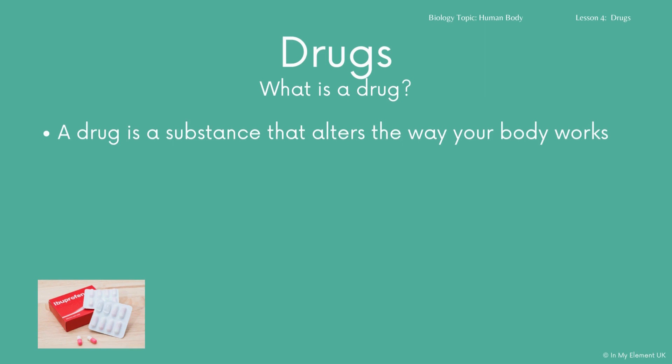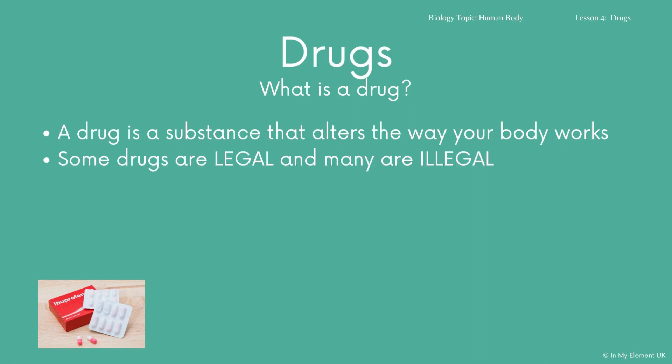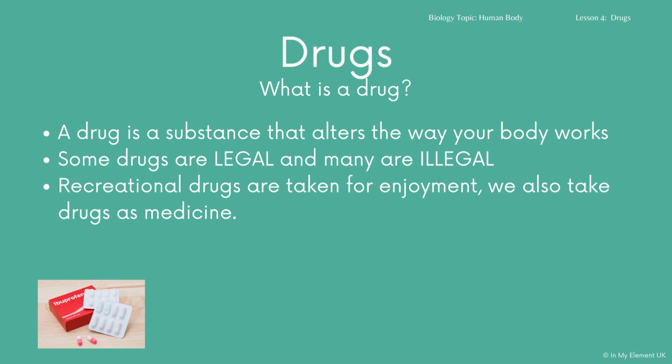A drug is classed as a substance that alters the way that your body works. It will affect certain things — it could affect the activity of your brain, your energy levels, your pain threshold, and the clarity with which you think. Now, some drugs are legal and many, many drugs are illegal.